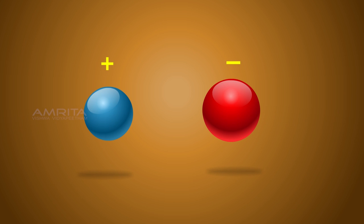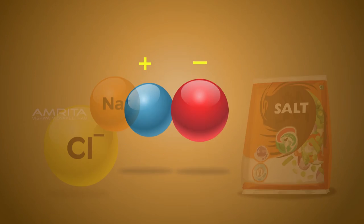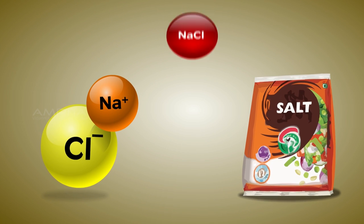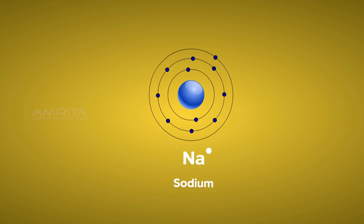Ionic compounds contain ions that are held together by the force of attraction between oppositely charged ions. Sodium chloride, or common salt, is a good example of an ionic compound.